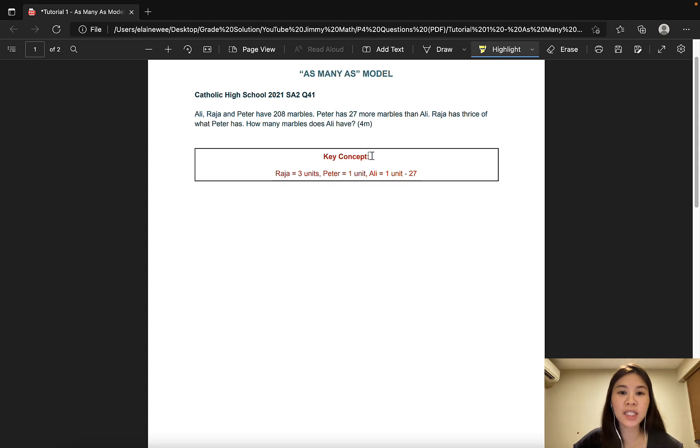The first question is taken from Catholic High School and it is worth four marks. Ali, Raja and Peter have 208 marbles. Peter has 27 more marbles than Ali. Raja has thrice of what Peter has. How many marbles does Ali have?